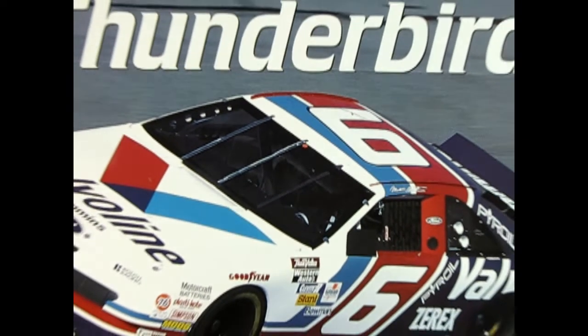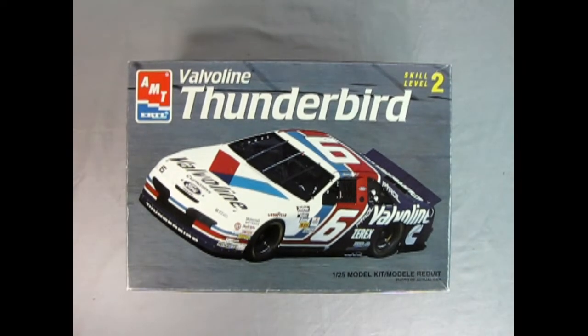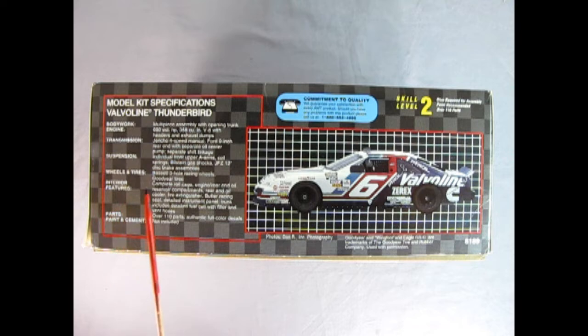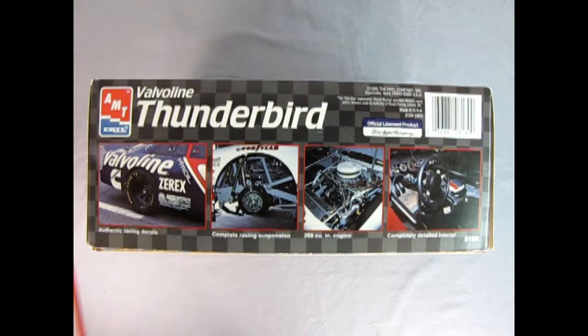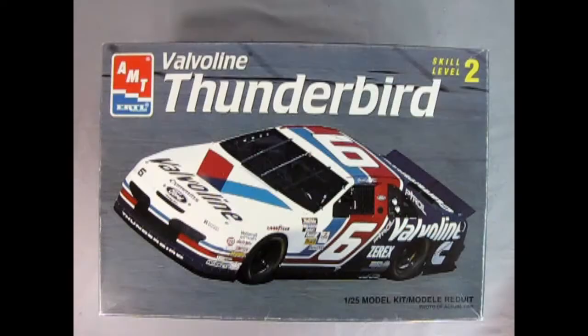Once again, it's time to hit the old NASCAR oval as we check out AMT Ertl's Valvoline Ford Thunderbird Skill Level 2 model kit. This is a 125th scale model kit with a photo of the actual car right on the box. On this side of the box, we get a wonderful write-up of our Valvoline Thunderbird. This is a Skill Level 2 model kit for ages 10 and up. It has over 110 parts and will require paint and glue. On this side of the box, we get some wonderful photographs of the Valvoline Thunderbird. It has authentic racing decals, complete racing suspension, a 358 cubic inch engine and a completely detailed interior.